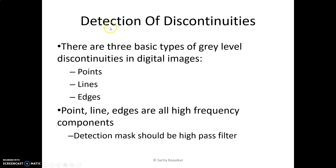Detection of edges is nothing but detection of discontinuity in the intensity in an image. There are three basic types of gray level discontinuities in digital images: points, lines, and edges. Points are also a discontinuity in the image — a change in intensity. Points, lines, and edges are all high frequency components — change in intensity. To detect these components, we need to use a high pass filtering mask.